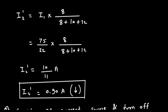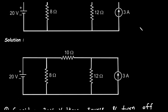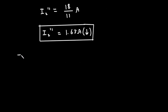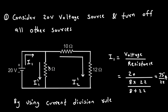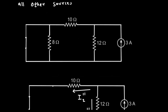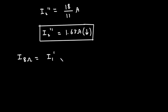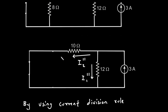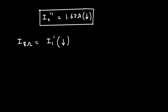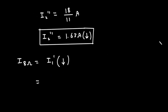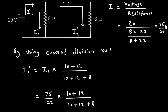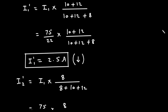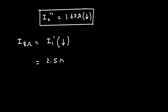Now we find the current through the 8Ω resistance. From step 1, the current through 8Ω is I1 prime, which is downward. In step 2 there is no current through this branch, so I8Ω = I1 prime = 2.5 ampere downward.